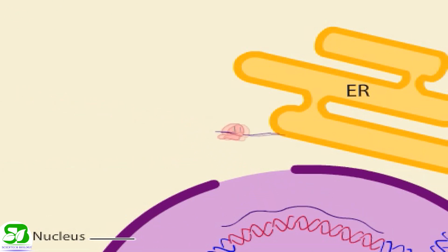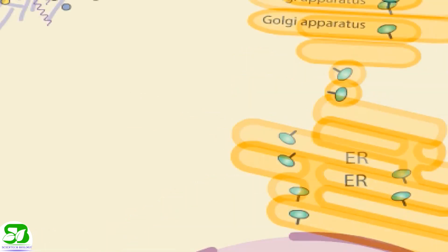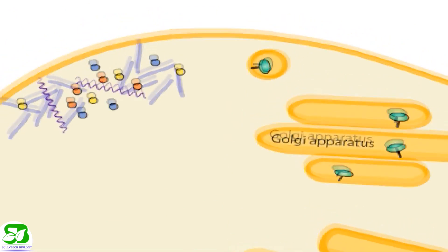Envelope proteins are produced in the rough endoplasmic reticulum or ER and then move through the Golgi apparatus before arriving at the cell surface.